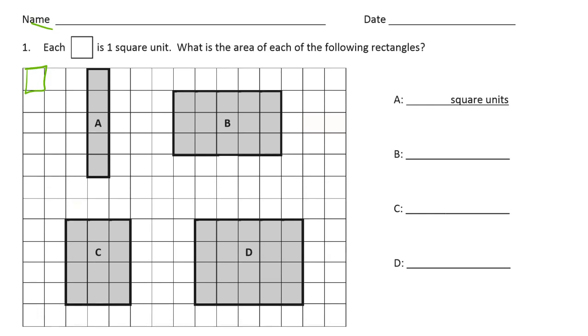For the first one, they wrote down the units — square units — but we're going to have to write it for the rest of them. A is one, two, three, four, five — five square units.